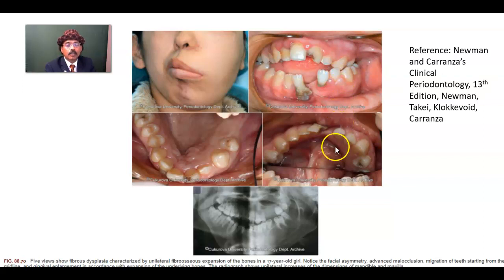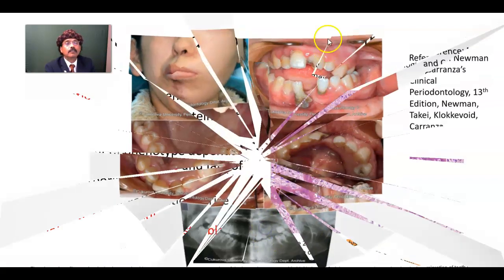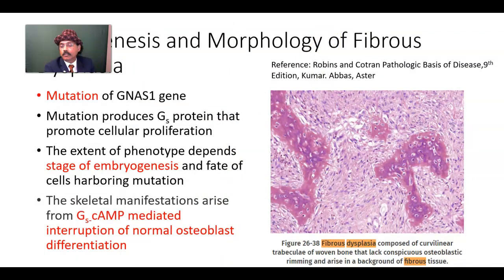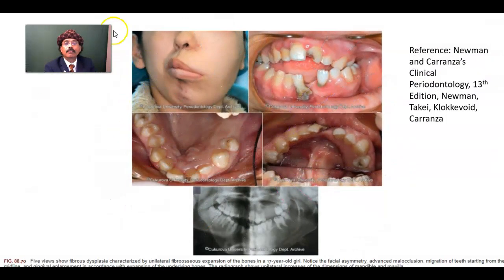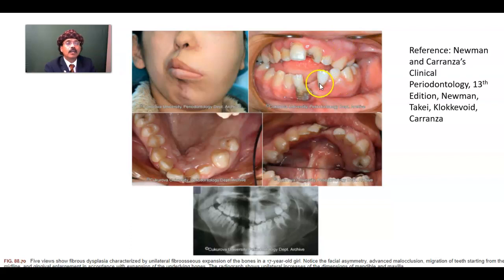Radiograph shows unilateral increase in the dimension of mandible and maxilla — facial asymmetry and the fibrous dysplasia visible in the mandible and maxilla. There will be malocclusion because this bone carries the teeth, and there will also be enlargement of the gingiva because of expansion of the underlying bone.